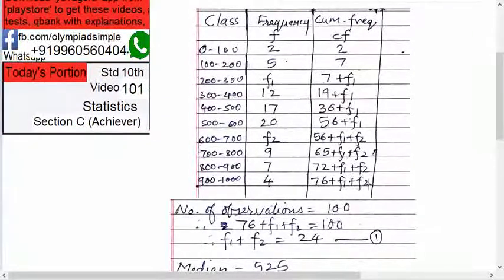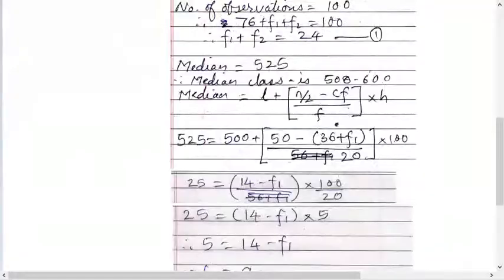So 76 plus f1 plus f2 will be equal to 100. So add them and solve: f1 plus f2 equals, bring this on the other side, 24. So this is equation number one. Now median is given as 525, so it will line...